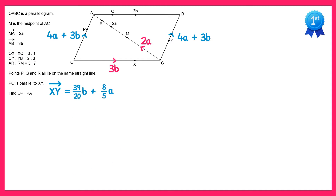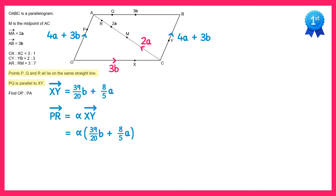Next, in the question we're told that P, Q, and R are all on the same straight line, and that PQ is parallel to XY. Since P, Q, and R are collinear and PQ is parallel to XY, the vector PR must also be parallel to XY. This means we can write the vector from P to R as some multiple — let's call it alpha — of XY. So PR equals alpha times (8 fifths A plus 39 over 20 B), which expanding gives 8 fifths alpha lots of A plus 39 over 20 alpha lots of B.